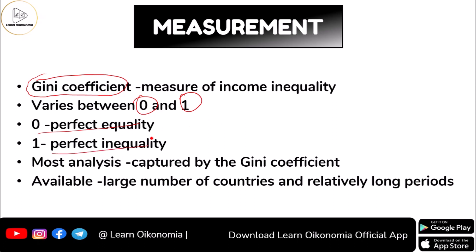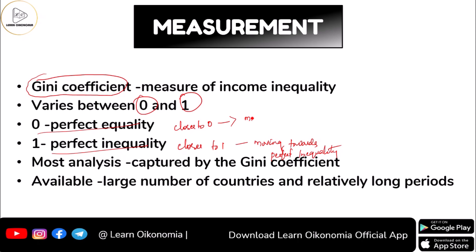If your nation's Gini coefficient is closer to 1, your nation is moving towards perfect inequality. If the value is closer to 0, then your nation is moving towards perfect equality.